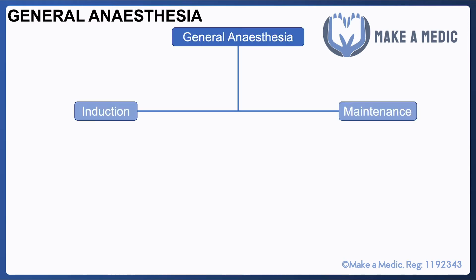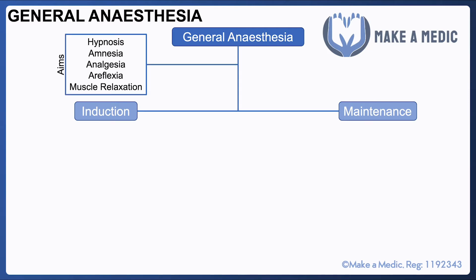General anesthesia has two main aspects: induction and maintenance. Before we get into that, let's have a quick chat about what exactly general anesthesia is and what it tries to achieve. There are five main aims of general anesthesia, and various different drugs are used to try and achieve these aims.